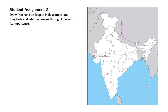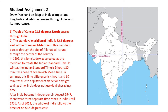One very important latitude and one important longitude pass through India. The important latitude is 23.5 degrees north — the Tropic of Cancer. The important longitude is the Standard Meridian at 82.5 degrees east of the Greenwich Meridian. This meridian passes through the city of Allahabad and runs through the centre of the country. In 1905, this longitude was selected to create Indian Standard Time, which is 5 hours 30 minutes ahead of Greenwich Mean Time.